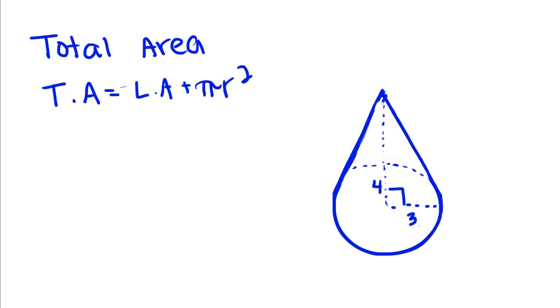So to find our total area, we have to take what our lateral area is, which we find by taking pi times our radius times our slant height, and we're going to add it to the area of this circle, so pi r squared.